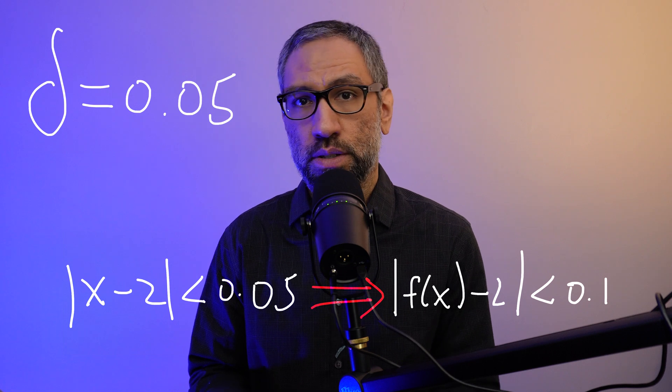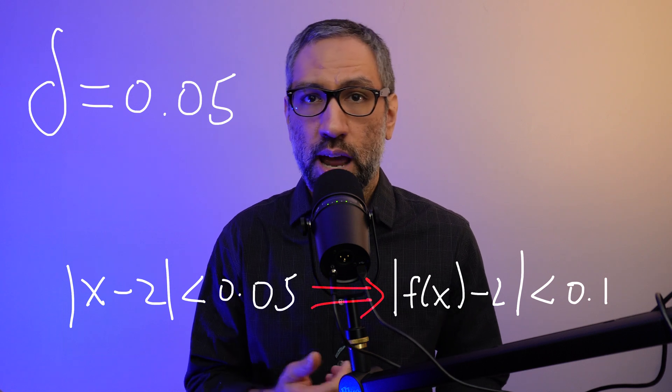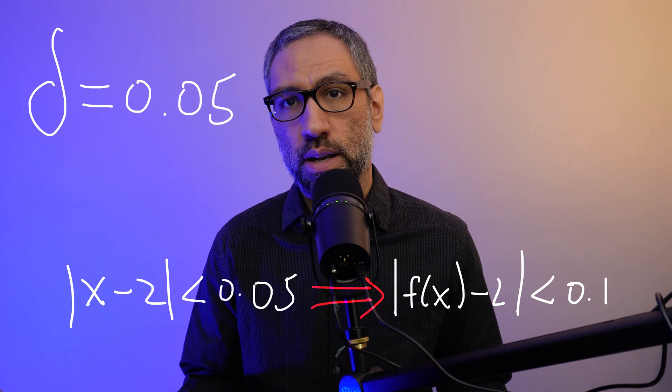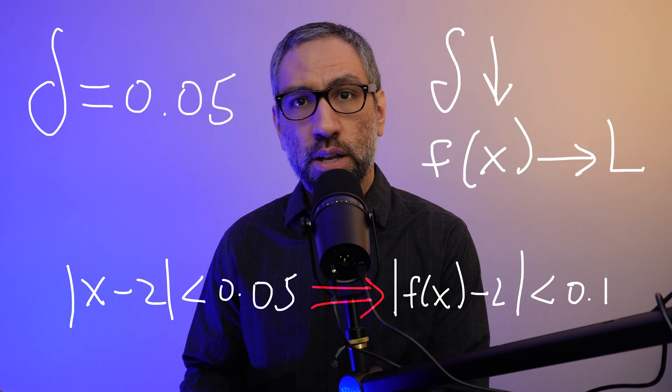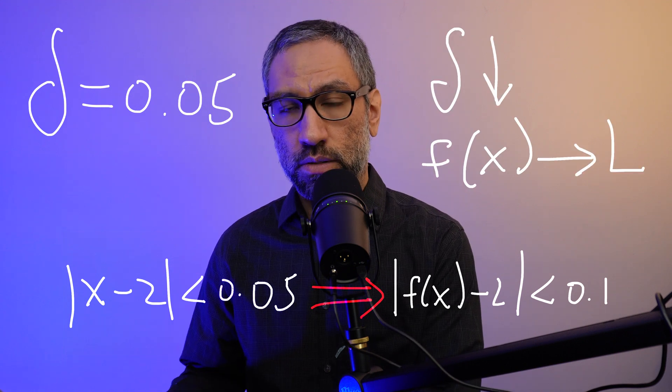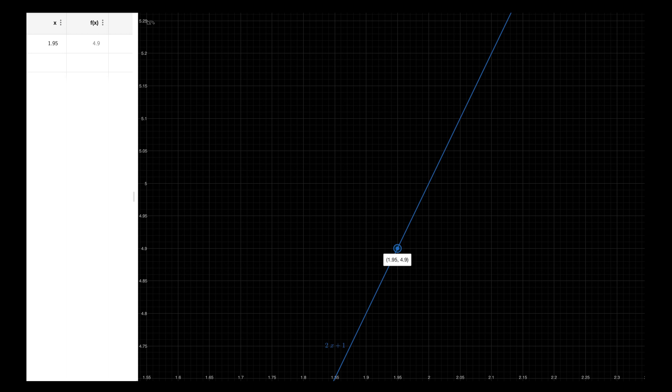If we do the math, we can actually find that delta equaling 0.05 works. This means that if the distance between x and 2 is less than 0.05, then the distance between f(x) and L is less than 0.1. And we keep making delta smaller and smaller if we want to get even closer to L. For example, if we plug in 1.95, which is within 0.05 of 2, f(x) is 4.9. And if we keep plugging in values for x that are within 0.05 of 2, we notice that f(x) gets closer and closer to 5.